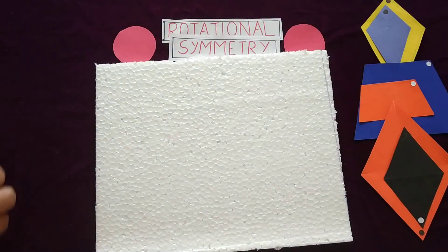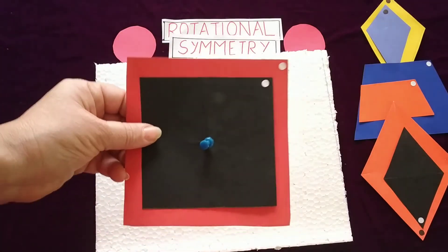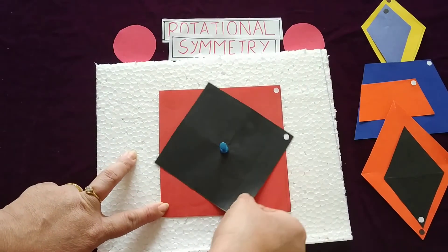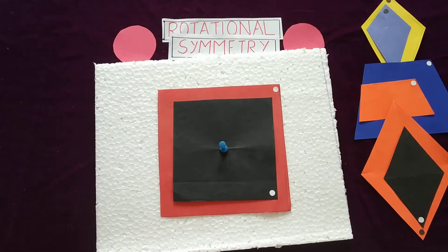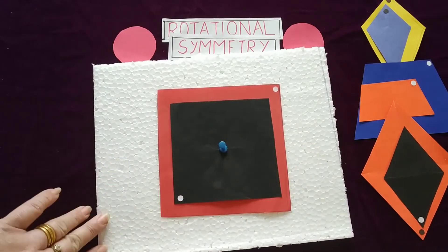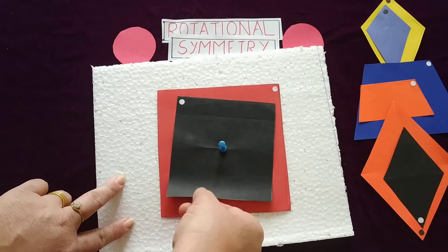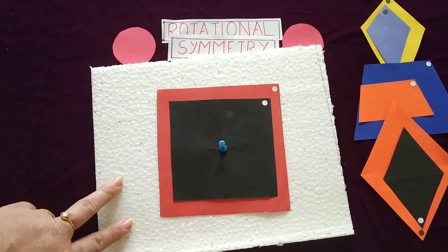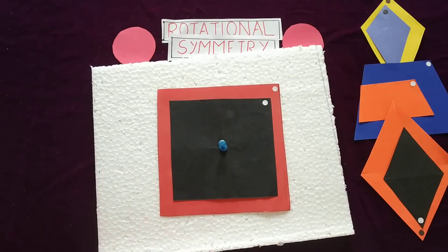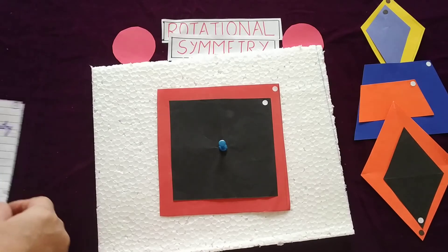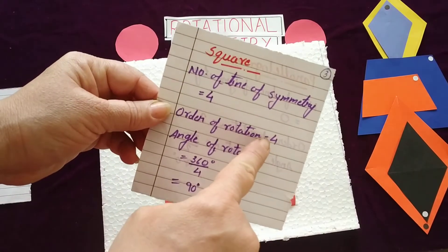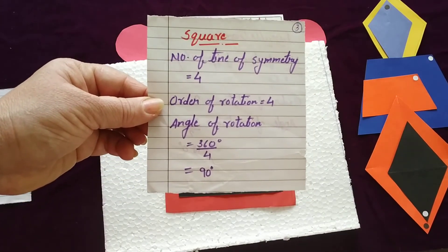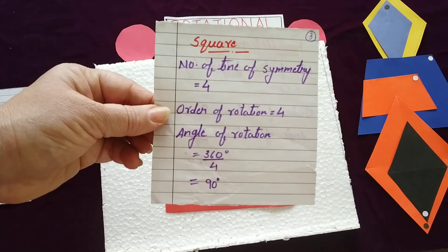Now the next one is the square. Two dots are on the same place — start rotating. First rotation: you can see two squares overlap. Second rotation: again the same. Third rotation: again two squares are in the same place. Fourth rotation: again the dots are on the same place. So in a square, the order of rotation is 4. The angle of rotation is 360 degrees divided by 4 = 90 degrees. And the number of lines of symmetry is 4.